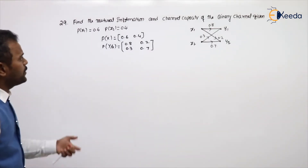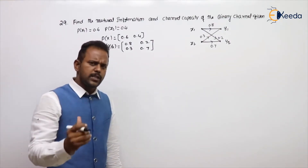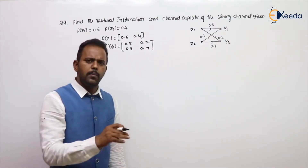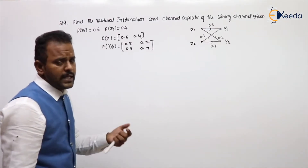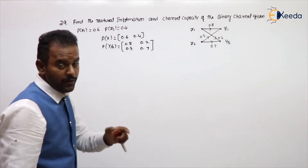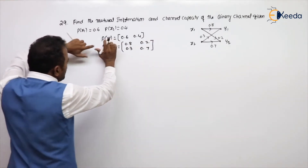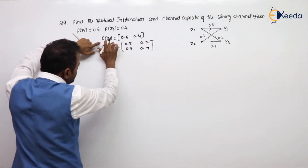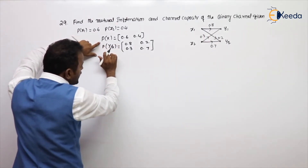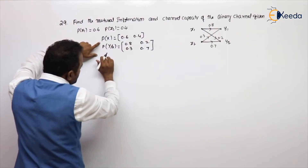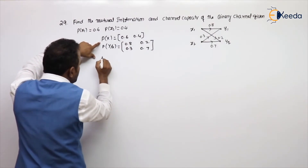Now let me calculate the mutual information. There are two ways: H(x) - H(x|y), or H(y) - H(y|x). I am going with H(x) - H(x|y). To calculate H(x|y), I need the joint probability matrix P(x,y). Let's calculate the joint probability matrix.